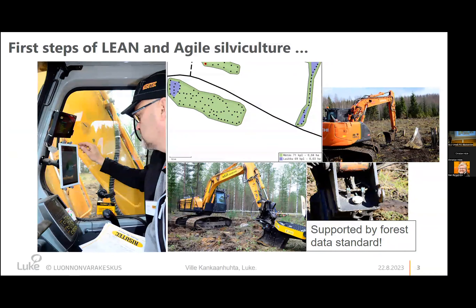The excavator can carry even two different buckets or devices with a rapid change between them. You are then able to locate different soil preparation spots and deliver this information for seedling production and logistics, to provide the proper seedlings with different tree species or different properties. If you use mechanized planting, the positioning of seedlings is very handy.